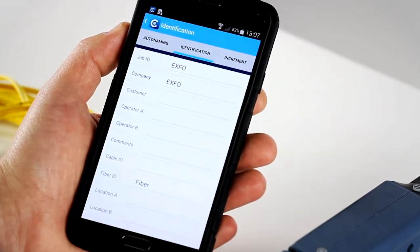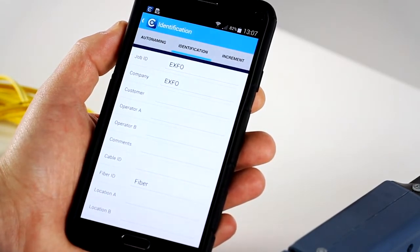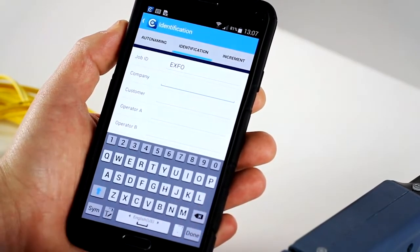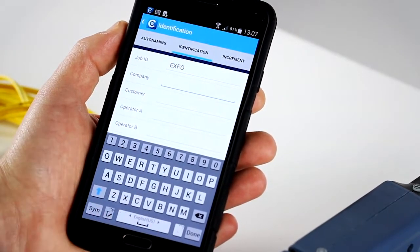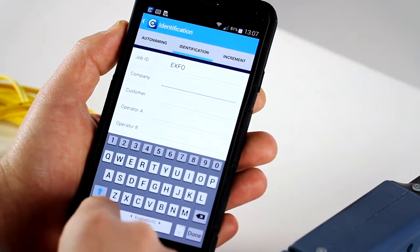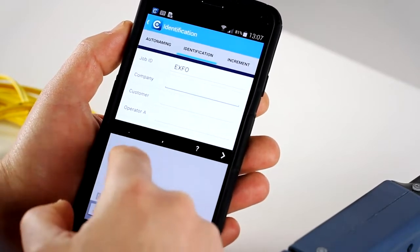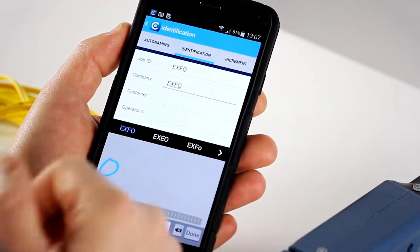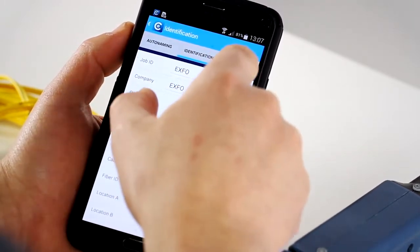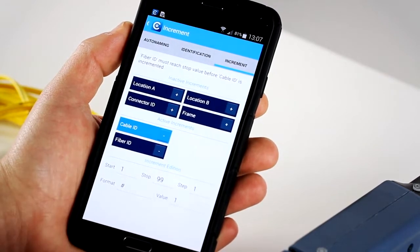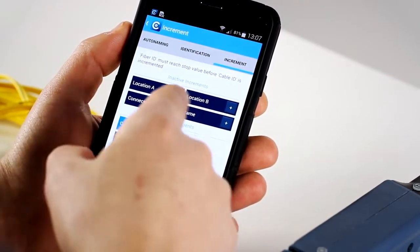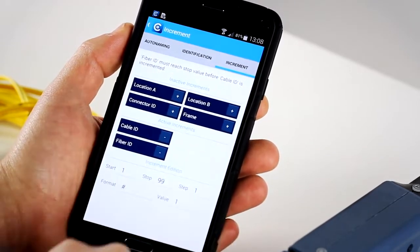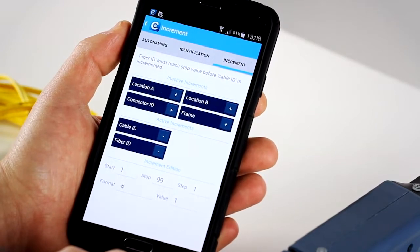You can also go into the identification and really input all the information that you will need in order to close your job and send your reports afterwards. Basically, all the information is there, such as you will find on a complete fiber inspection solution on a platform or test equipment. You can type it with the keyboard, or you can also benefit from the smart device option. If you have options to use either the voice or even handwrite, I can write EXFO like this. Very easy. That's really convenient when you're in the field in order to capture all the information you want.